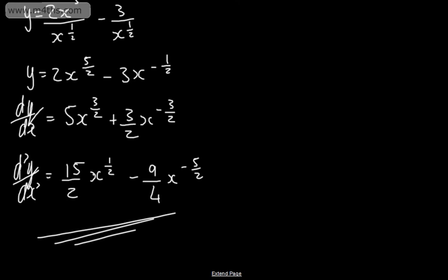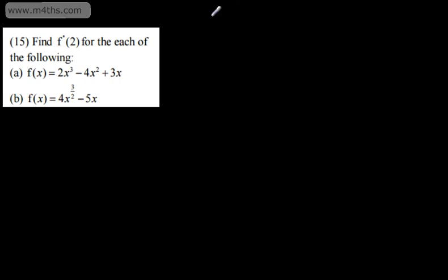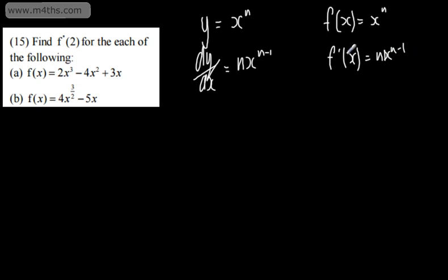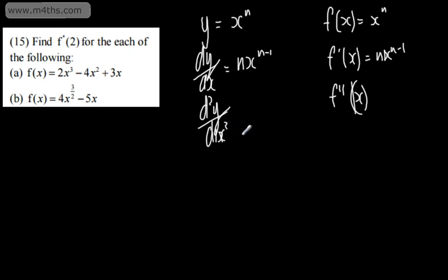Now let's look at some more questions where we're asked to find f''(2) for each of the following. If f(x) = xⁿ, then f'(x) = nxⁿ⁻¹. The notation f''(x) is equivalent to d²y/dx² — this is the difference between Leibniz and Newtonian notation. We can also have f''' which corresponds to d³y/dx³, and so on.